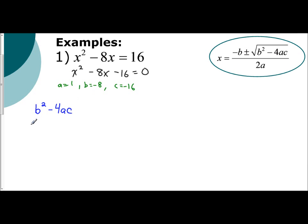So b squared is negative 8 squared minus 4 times a, which is 1, times c, which is negative 16. So negative 8 squared is a positive 64. Negative 4 times 1 times negative 16 is a positive 64.